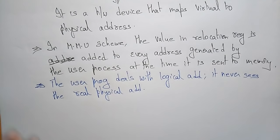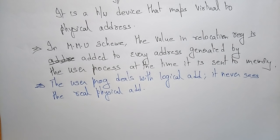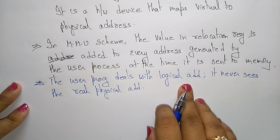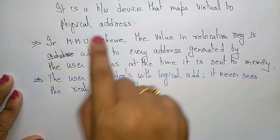We often write large programs or execute large amounts of data that exceed the physical memory in the system. The CPU deals with logical addresses only; the required information is stored in physical memory as needed. The user program always deals with logical addresses and never sees the real physical address.